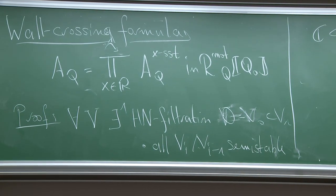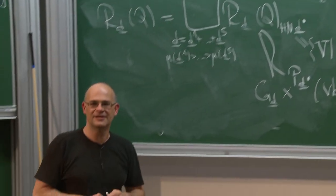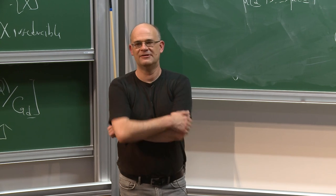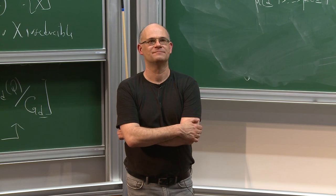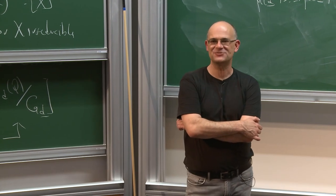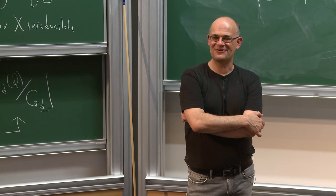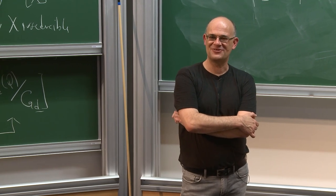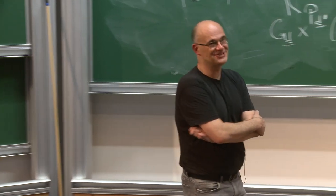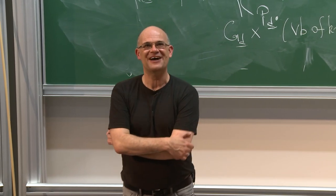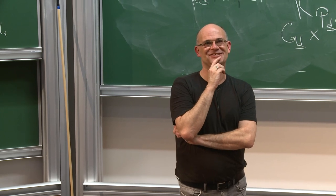A question from the chat: is there a connection between a variation of stability θ and the monodromy of A_Q^x? That sounds like a great suggestion — I have no idea what this monodromy could be but it would be wonderful if it were true. If the anonymous participant could send an email elaborating what this monodromy could mean, I would be happy to think about it.